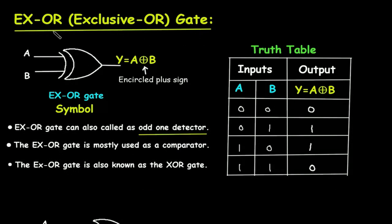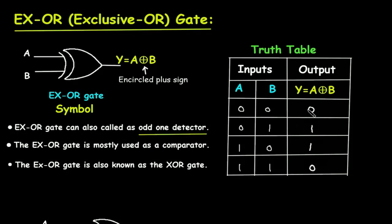XOR gate stands for EXCLUSIVE OR gate. This is the symbol for XOR gate — XOR gate has 2 inputs and 1 output. Mathematically, the output Y is given as Y is equal to A ⊕ B. XOR gate can also be called an odd-1 detector. In the truth table, when the number of 1s in the input is odd, the output is 1. When the number of 1s is even, the output is 0.